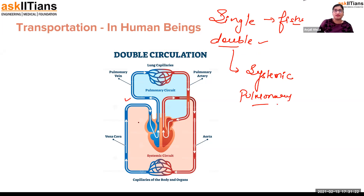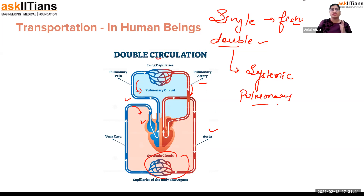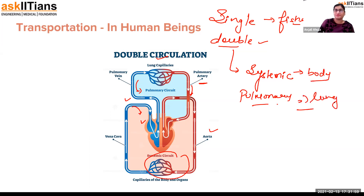Through the vena cava, blood is collected into the heart, and then oxygenated blood comes back through the pulmonary artery. From there it returns to the heart, and through the aorta it is distributed to all parts of the body. Blood is filtered in the lung capillaries. Systemic circulation accounts for the supply of oxygenated blood to all body parts, and pulmonary circulation is when blood moves into the lungs for filtration and comes back.